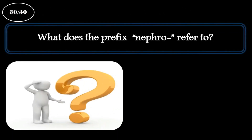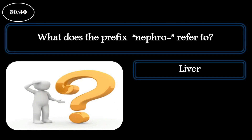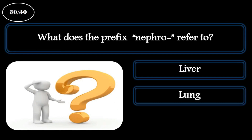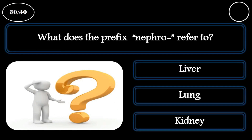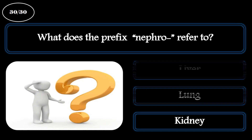Question 30. What does the prefix 'nephro' refer to? A: Liver. B: Lung. C: Kidney. The correct answer is kidney.